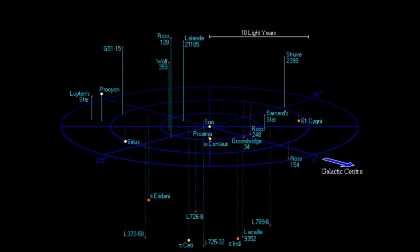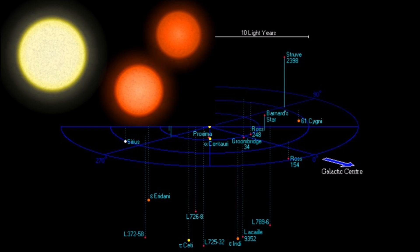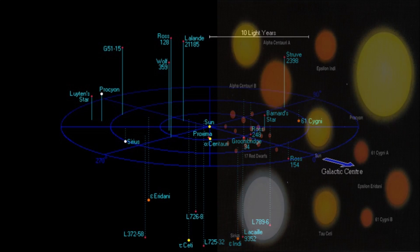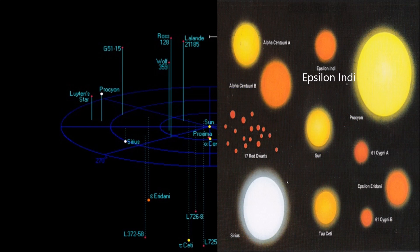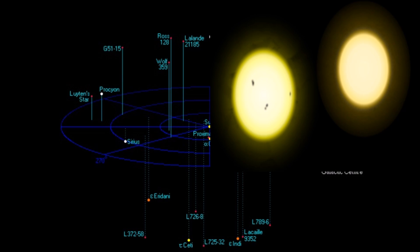Number five is Cygnia A and B, two stars, 11.4 light years away. Number six is Epsilon Indy. Tau Ceti main star has two brown dwarf companions and it's 11.8 light years away.